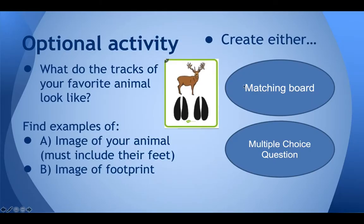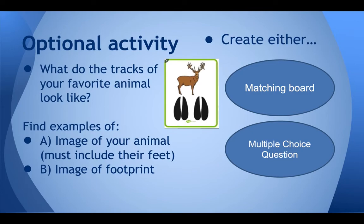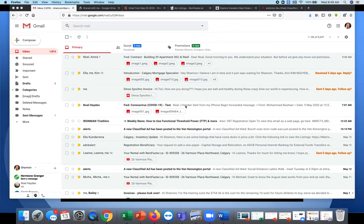The other option is creating a multiple choice question, and we're going to turn this into a bit of a game to switch with other people. The question could be something like: which example of tracks matches the beaver? Then include options A, B, C, and D with different track images, and try to make it a little tricky for the other person. This optional activity should be done by Sunday.